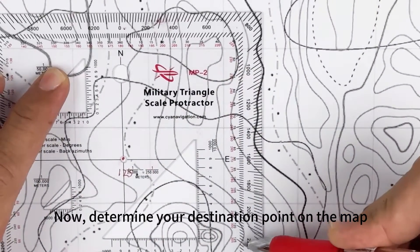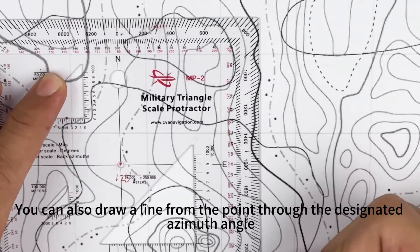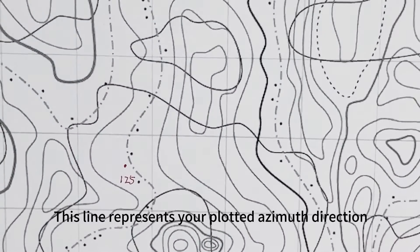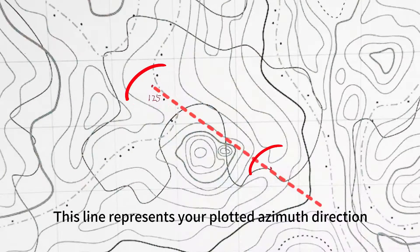Now, determine your destination point on the map. You can also draw a line from the point through the designated azimuth angle. This line represents your plotted azimuth direction.